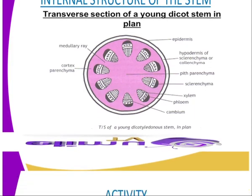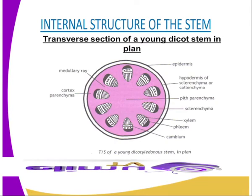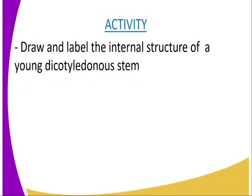As you can see from the diagram, the pith is the central region in a dicotyledonous stem. The pith consists of parenchyma cells that store water and food substances. Those are the functions of the different structures of the internal part of the stem.